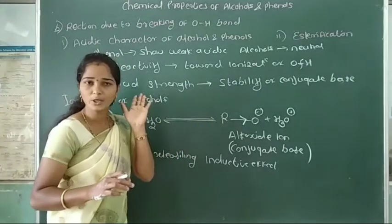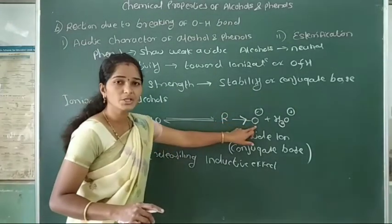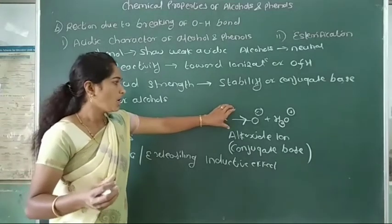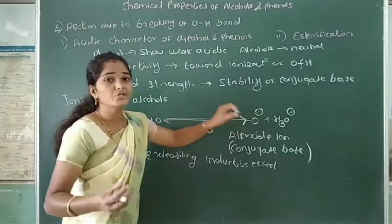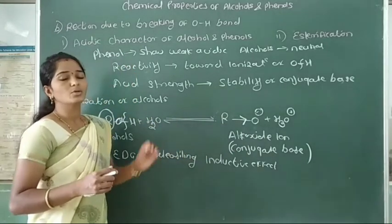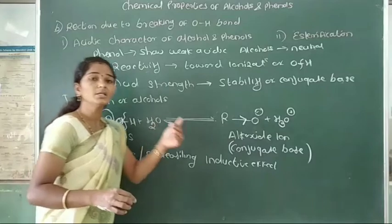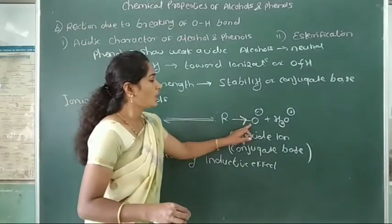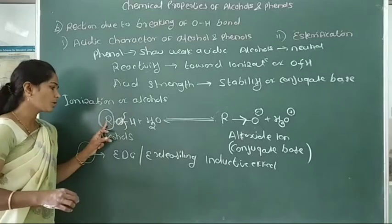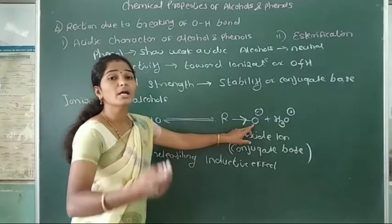This alkyl group is an electron-donating group. When an electron-donating group is attached to the oxygen atom, it destabilizes the alkoxide ion and decreases its stability. As the number of alkyl groups attached to the oxygen atom increases, the stability and acid strength of the alkoxide ion decreases.